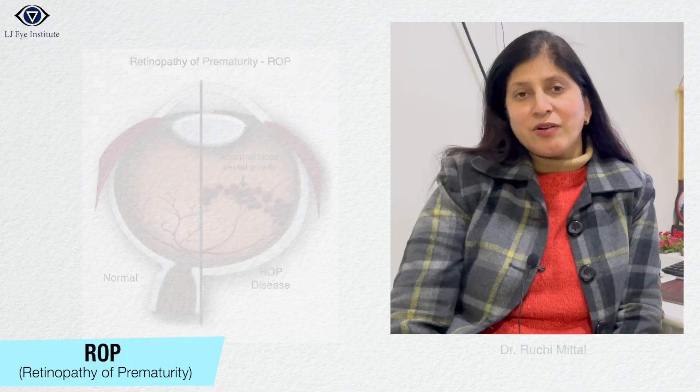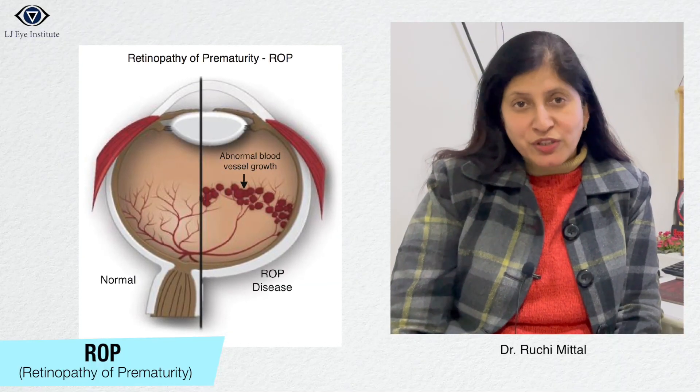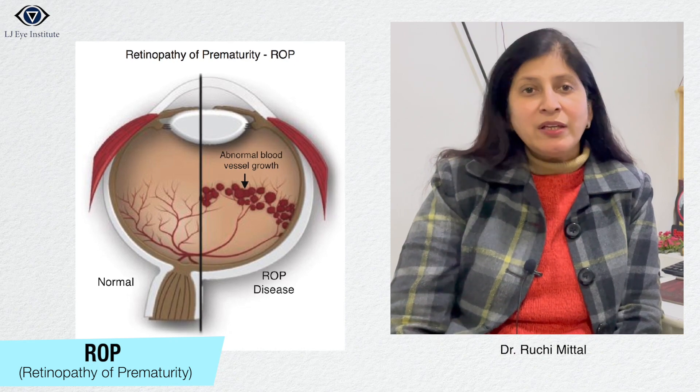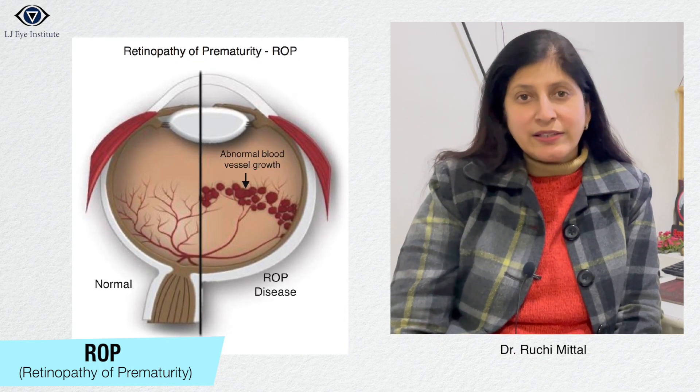Hello friends, today I am going to discuss a disease which is a potentially blinding disorder and generally it happens in infants when they are not able to tell us anything. This is the disease called Retinopathy of Prematurity. The name is enough to explain — this disease is premature in children, and retinopathy means retina is affected. So what is ROP or Retinopathy of Prematurity?